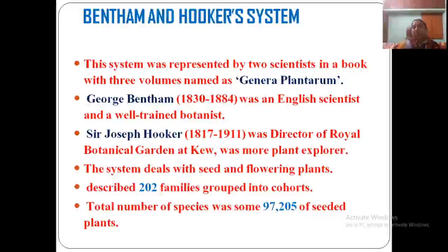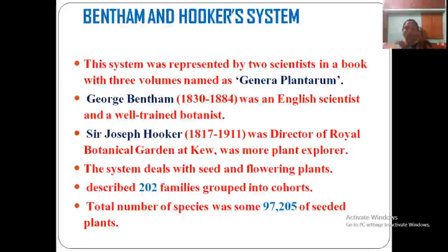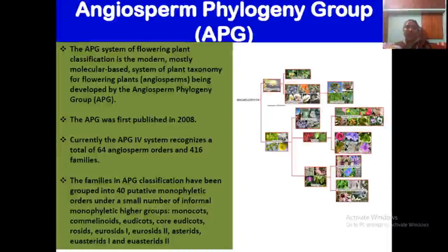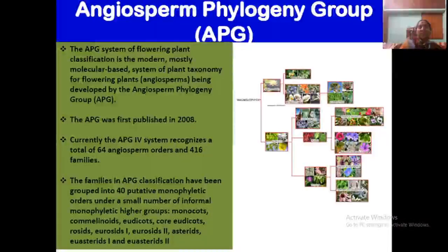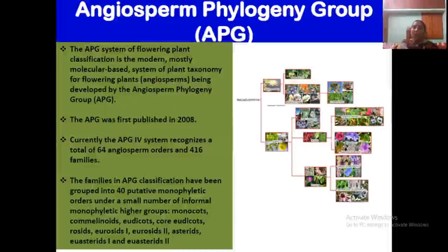The Bentham and Hooker system, already noted as a natural system, was published in Genera Plantarum. George Bentham was a well-known English botanist and Hooker was the director of the Royal Botanical Garden, Kew. According to them, flowering plants are divided into families grouped into cohorts or orders, covering a total of about 97,000 species. Another classification is the APG system — Angiosperm Phylogeny Group — the latest classification based strictly on evolutionary relationships and molecular studies, including DNA sequencing to study relationships among plants.